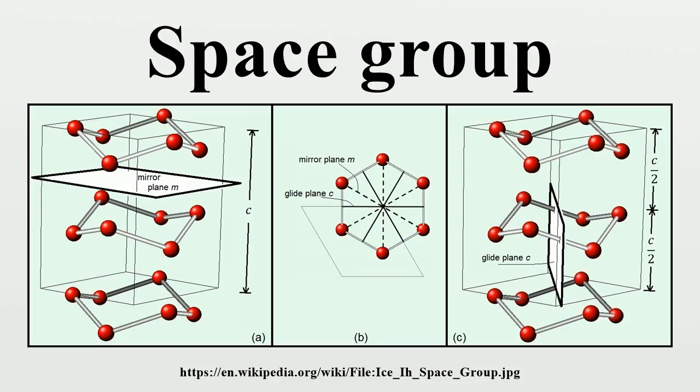The space groups in three dimensions are made from combinations of the 32 crystallographic point groups with the 14 Bravais lattices, each of the latter belonging to one of seven lattice systems. This results in a space group being some combination of the translational symmetry of a unit cell including lattice centering, the point group symmetry operations of reflection, rotation and improper rotation, and the screw axis and glide plane symmetry operations. The combination of all these symmetry operations results in a total of 230 different space groups describing all possible crystal symmetries.